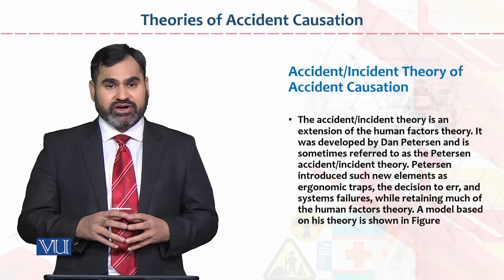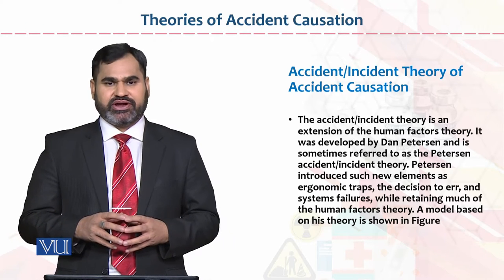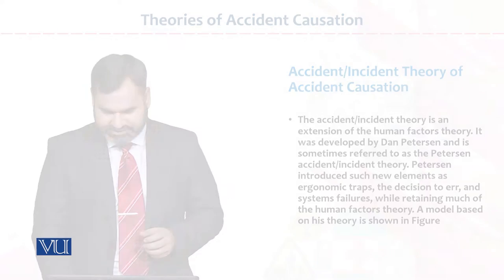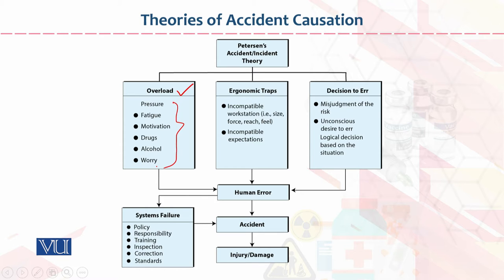A model based on his theory is shown in the figure of Peterson's accident-incident theory. The first point is overload. Here we see pressure, fatigue, motivation, drugs, and alcohol worry — these are factors commonly found among employees in an organization.